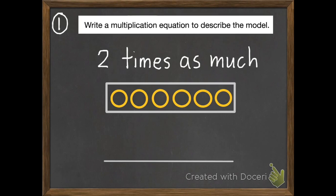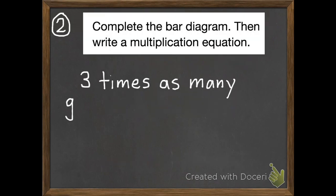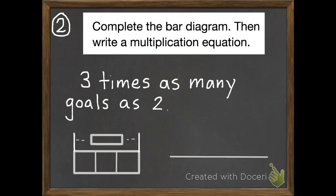Pause it. And then when you're ready, move on to question number two. Number two. Complete the bar diagram. Then write a multiplication equation. So you need to find three times as many goals as two. And then write your multiplication equation.